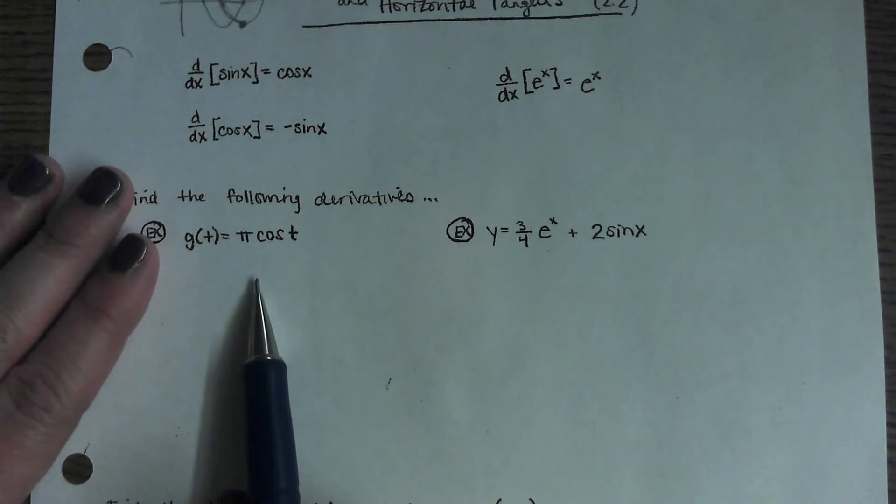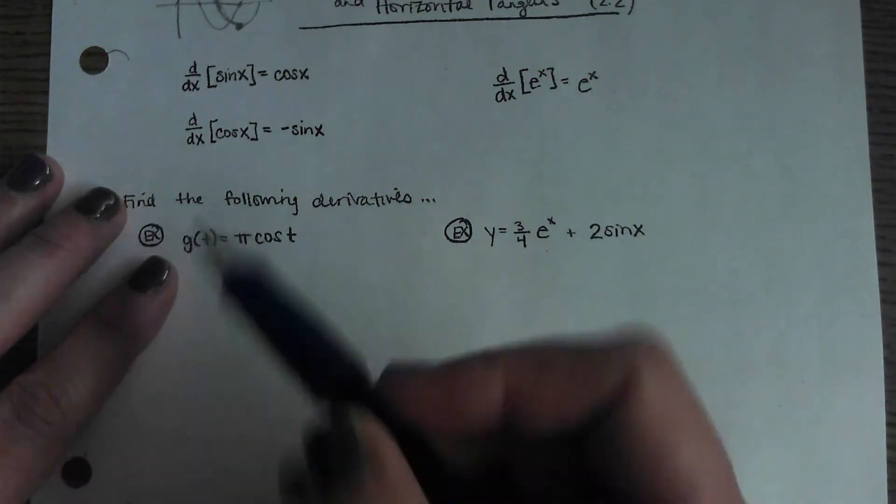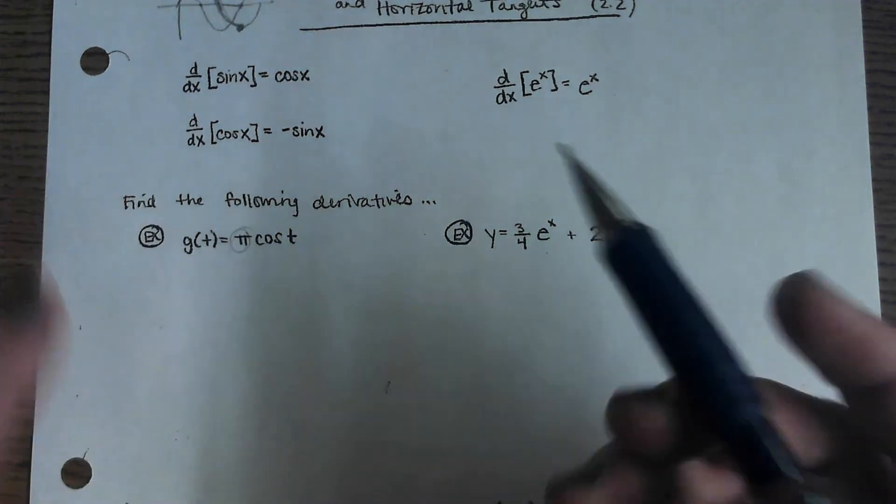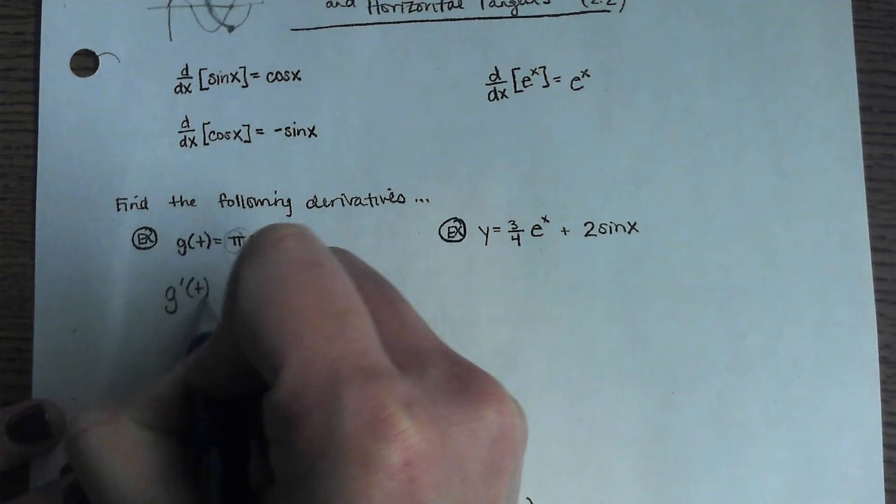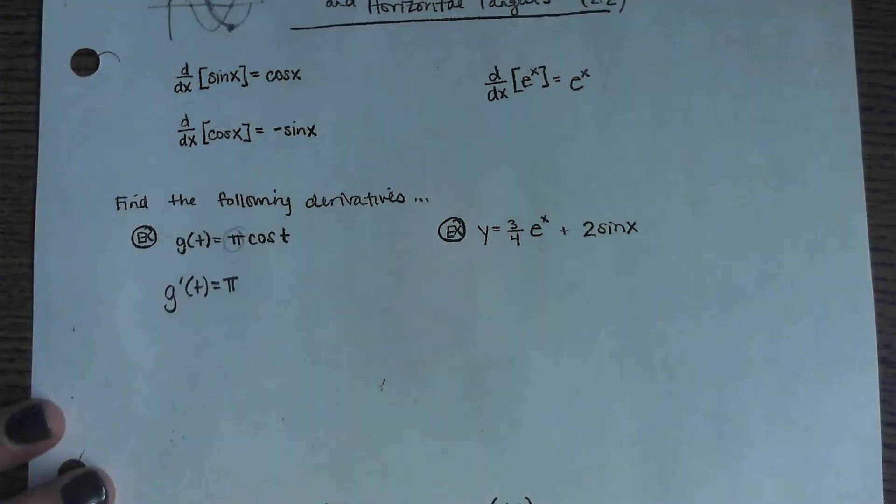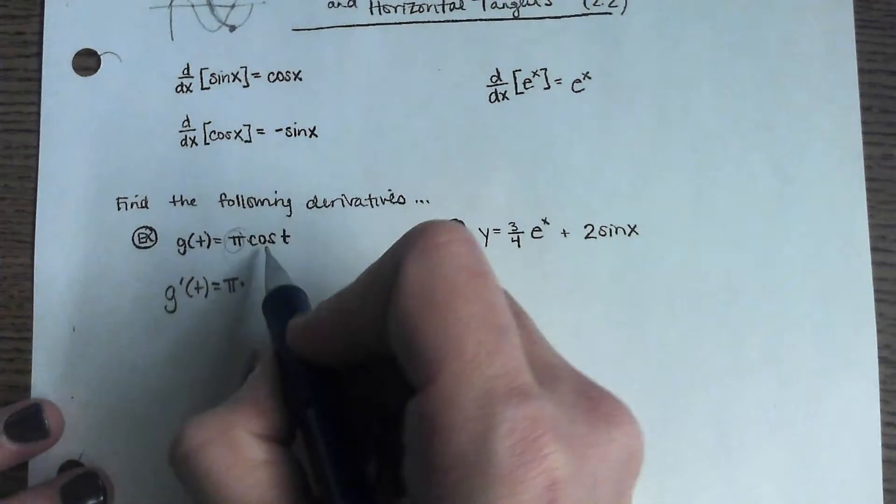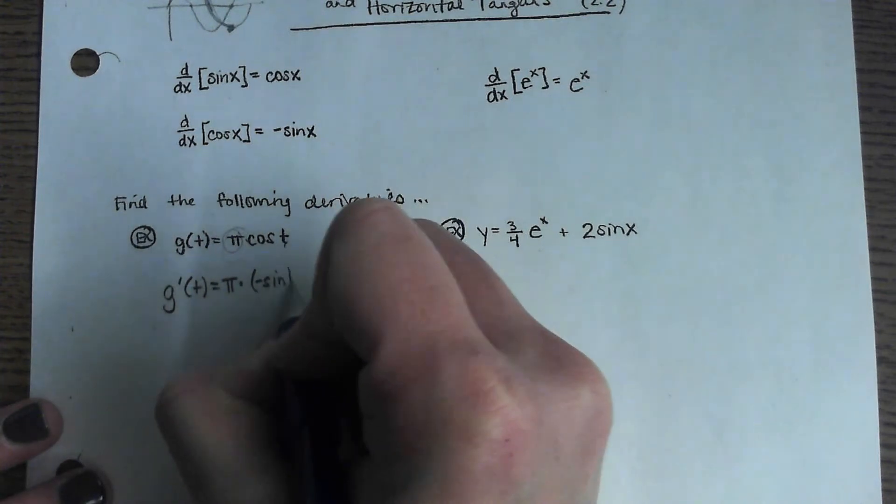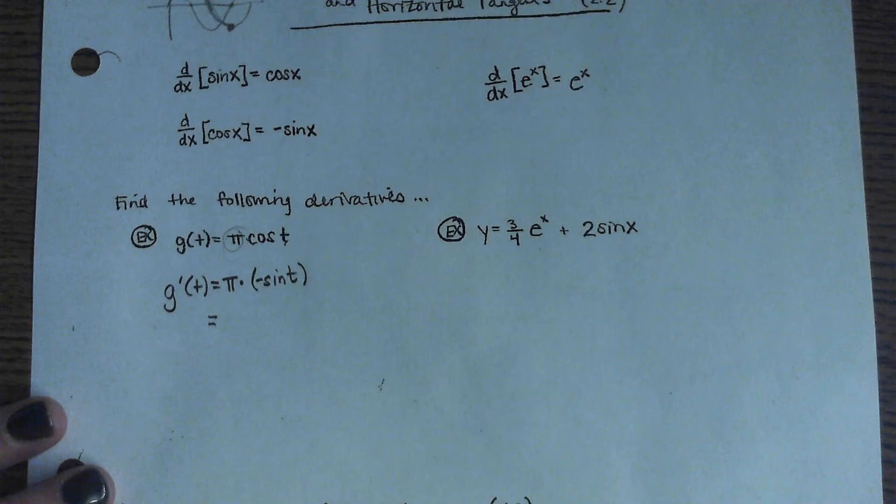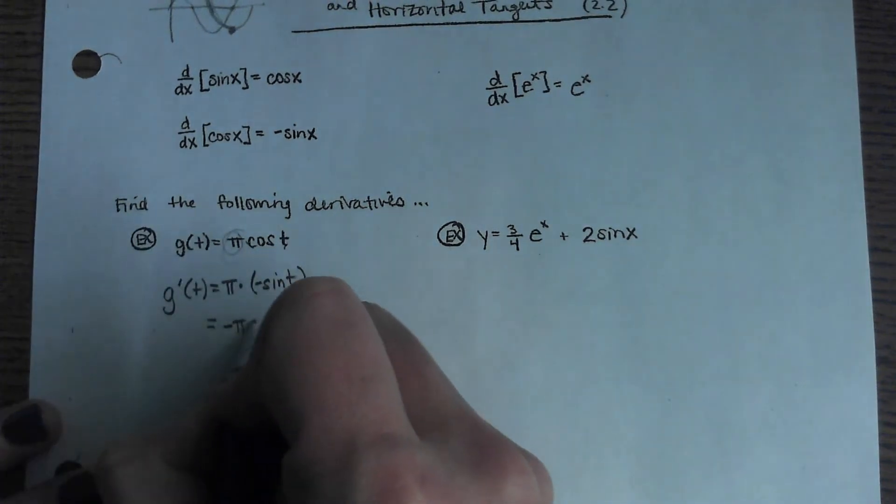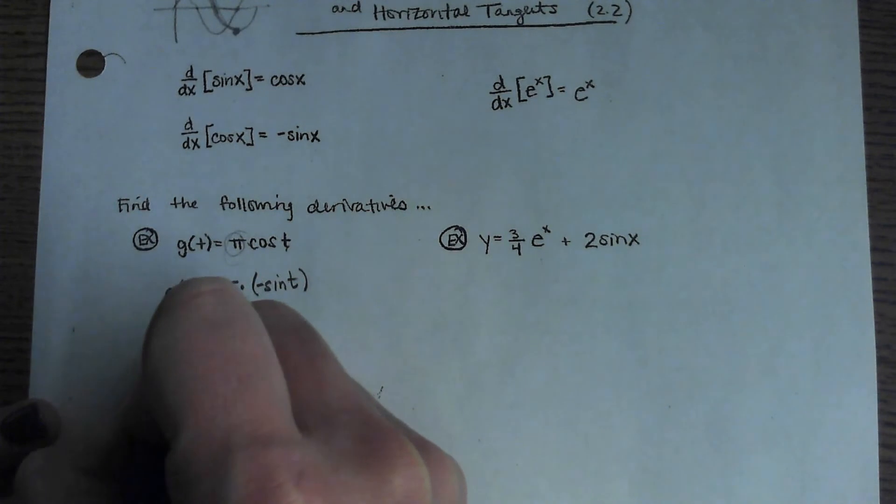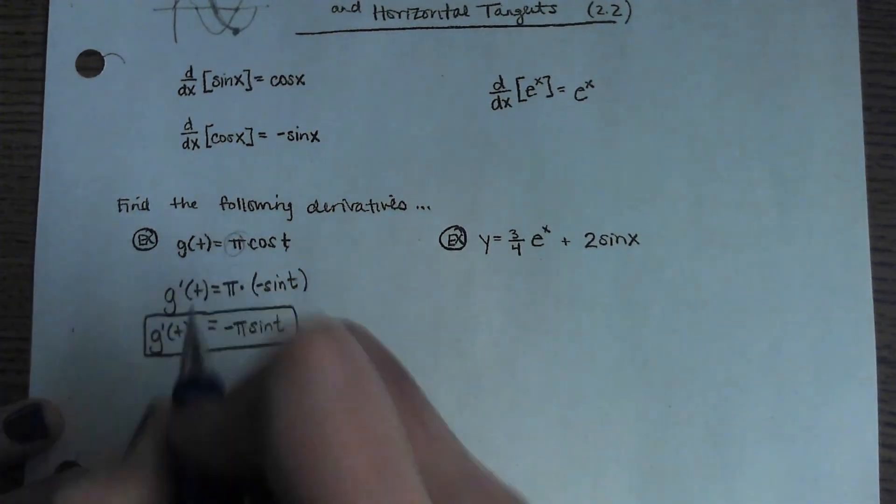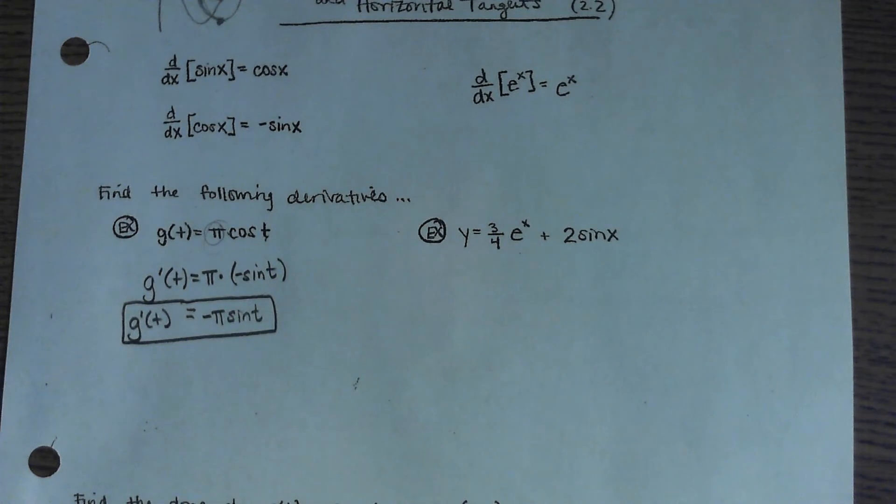So we're just going to use those rules to find the derivatives here. Now pi is just a constant, so that just can stay there. But g prime of t, if there's a constant out in front, that's just going to stay there, times the derivative of cosine is negative sine. So times negative sine of t. And then the negative sine really should be out in front. So negative pi sine of t would be your formula to use to find the slope of that g function at any location you were interested in.